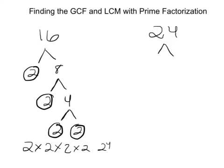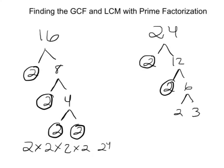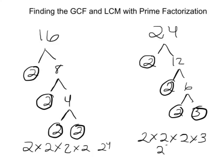For 24, I'm going to divide it by 2 since it's an even number, so 2 times 12. I'm going to break down 12 into 2 times 6. I'm going to break down 6 into 2 times 3. So now my prime factorization for 24 is 2 times 2 times 2 times 3, or 2 to the power of 3 times 3.